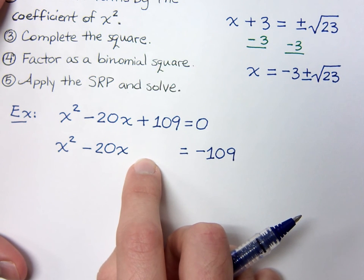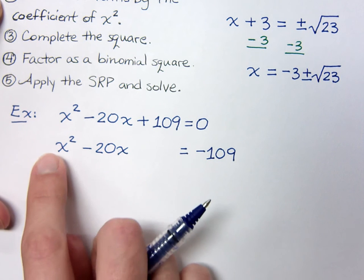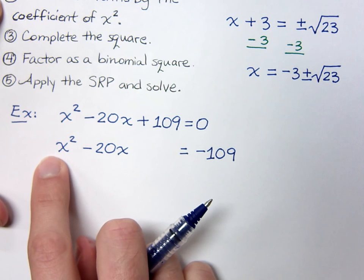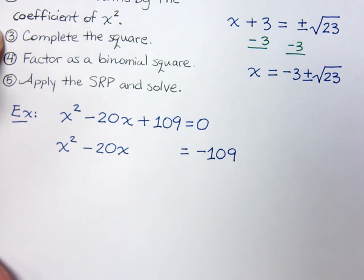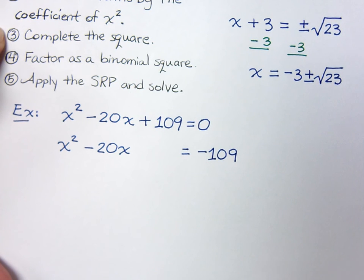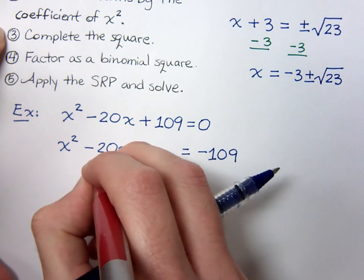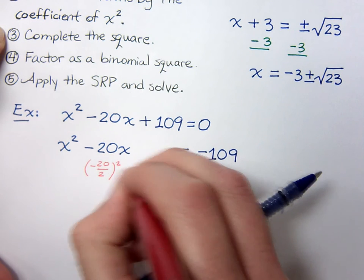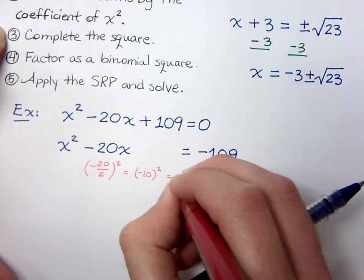Step two says to divide all terms by the coefficient of x squared. The coefficient of x squared is one, so dividing by one is not going to change anything. Step three is to complete the square — divide by two and square it. I take negative twenty, divide by two, and square it: that gives me negative ten squared, which equals positive one hundred. It's always going to be positive when you square it.